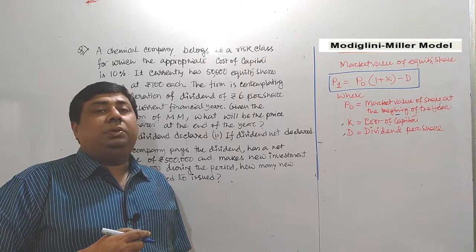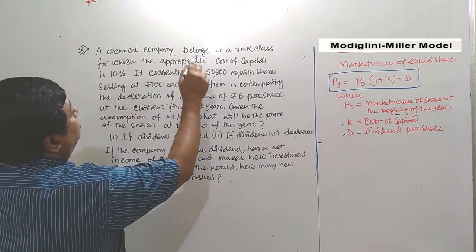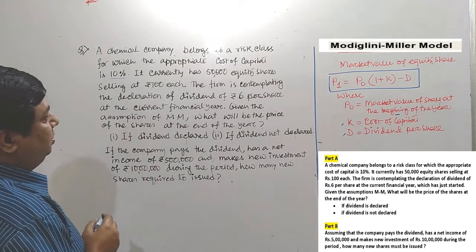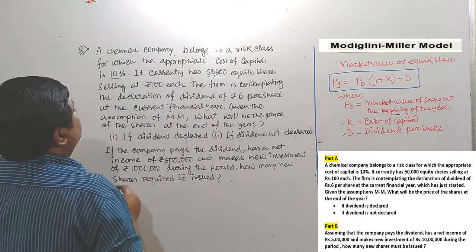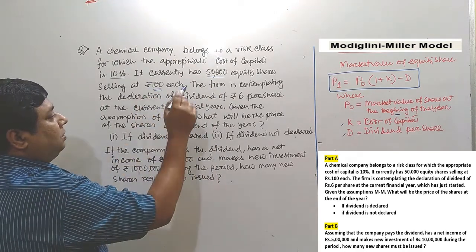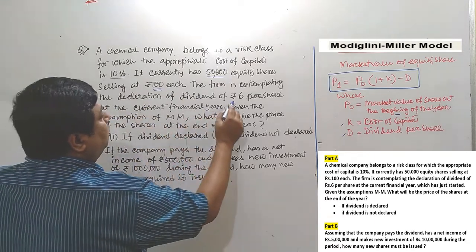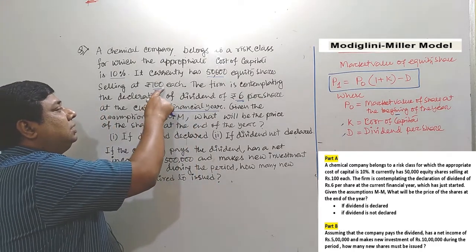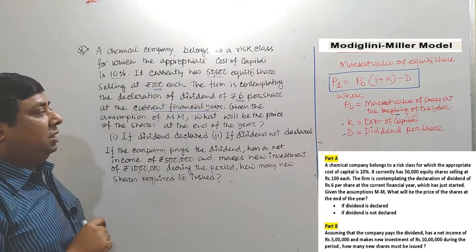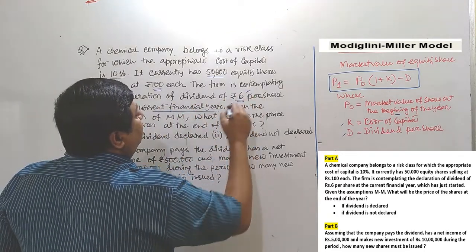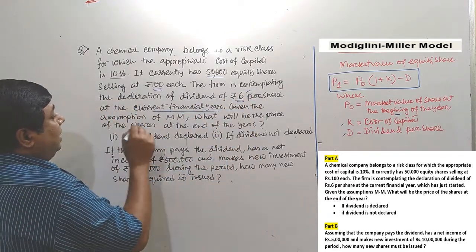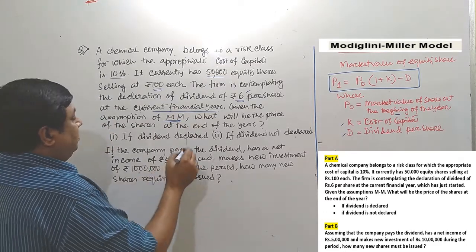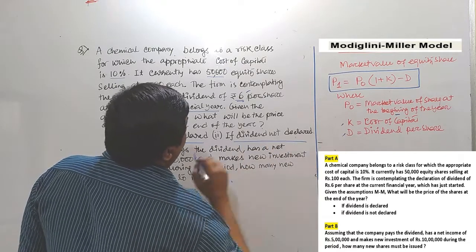Let's take another example regarding the MM model. A chemical company belongs to a risk class for which the appropriate cost of capital is 10%, so K is 10%. It currently has 50,000 equity shares selling at Rs.100 each. The firm is contemplating the declaration of a dividend of Rs.6 per share in the current financial year. So P0 is Rs.100 and dividend D is Rs.6. What will be the price of the shares at the end of the year if dividend is declared and if dividend is not declared?